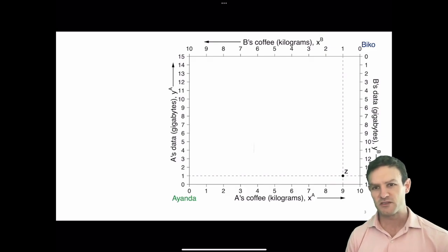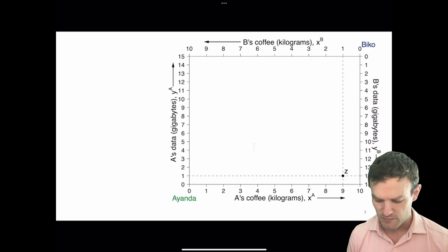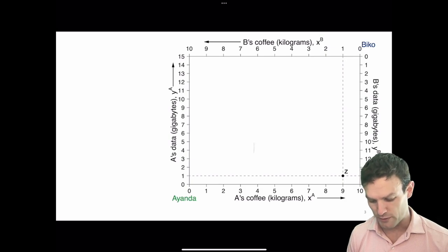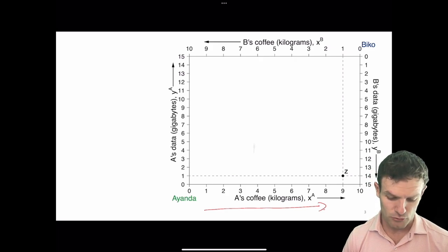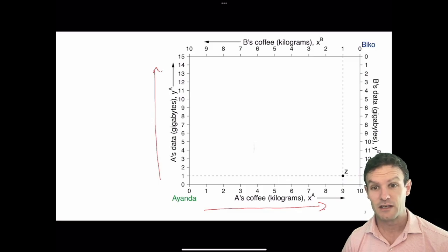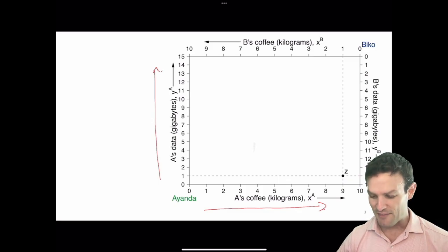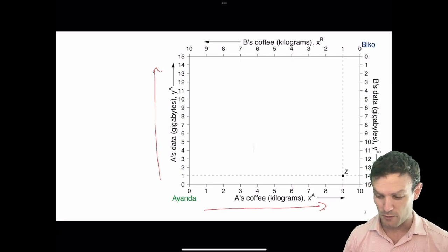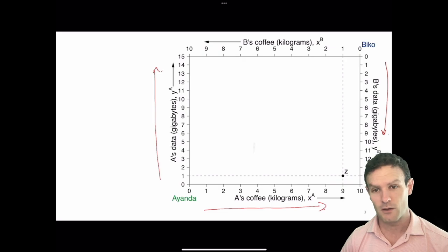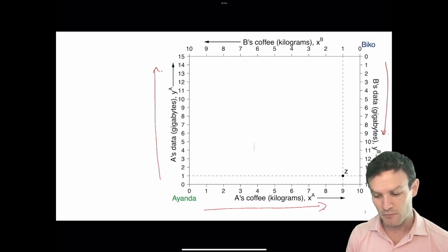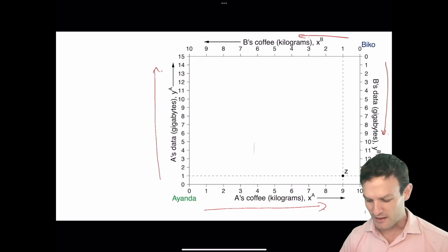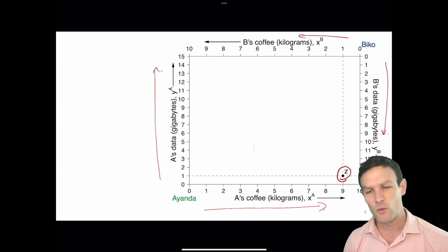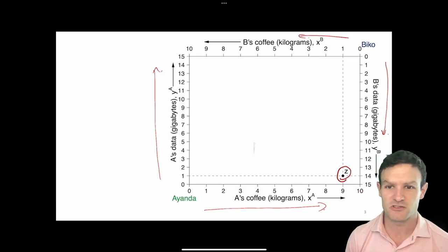In this Edgeworth box, we have a total amount of x. Xa goes along the horizontal axis from left to right — that's how much x Ayanda has. Going from south to north is how much y Ayanda has. Going from top to bottom is how much y Bicor has. And going from right to left is how much x Bicor has. We then have one allocation here, point z, which says how much each person has.